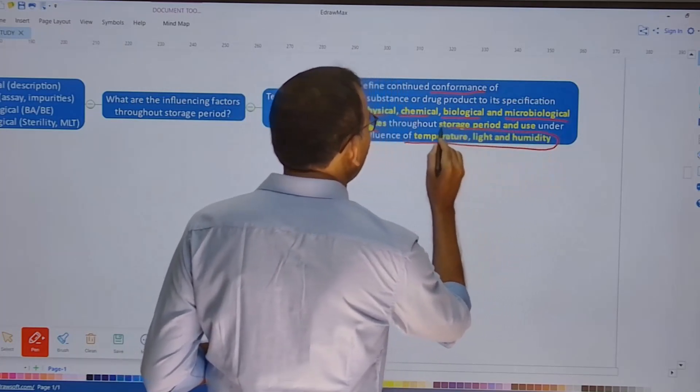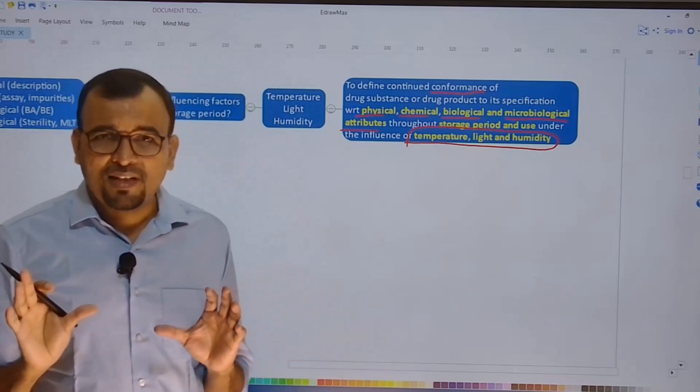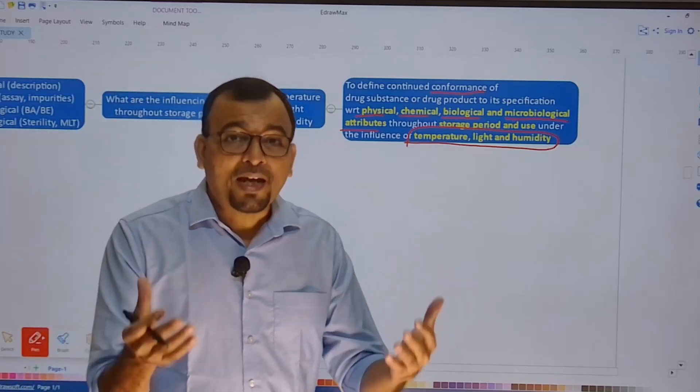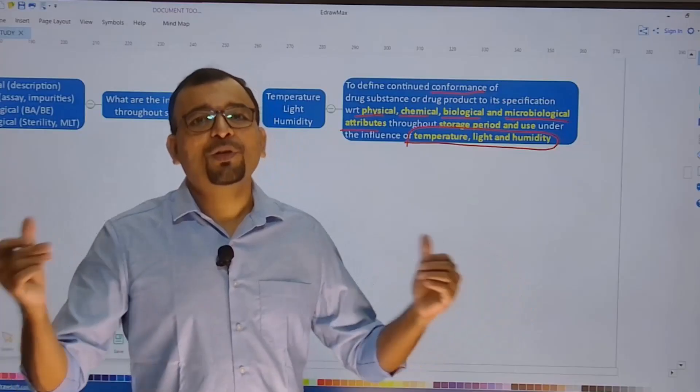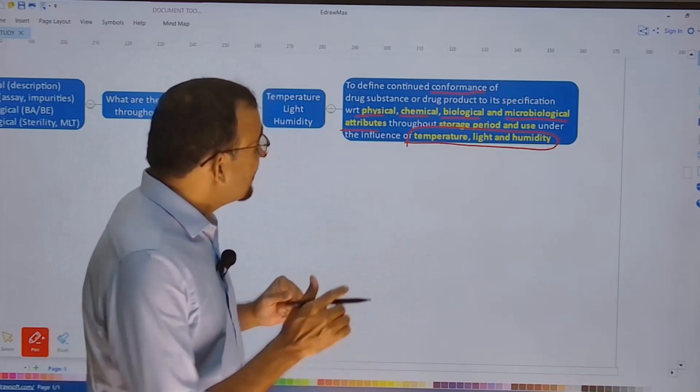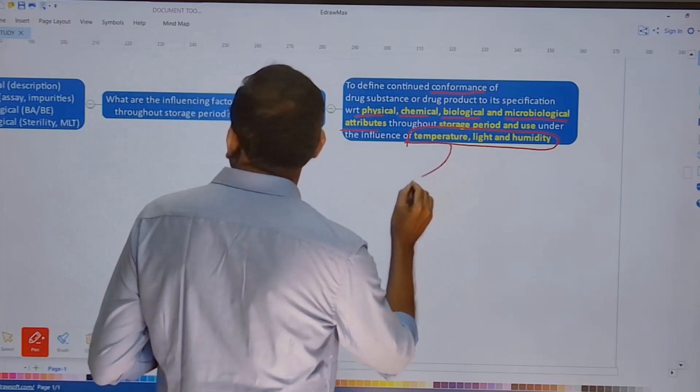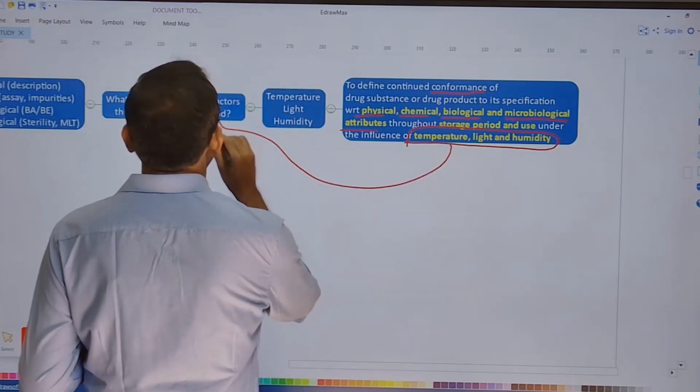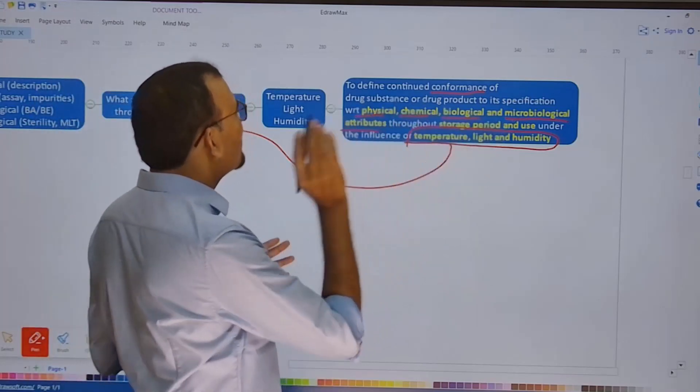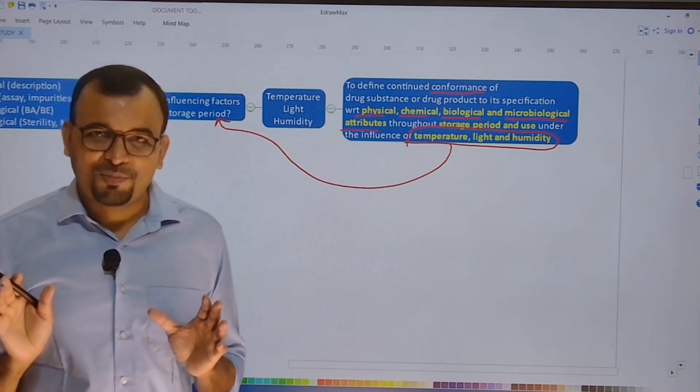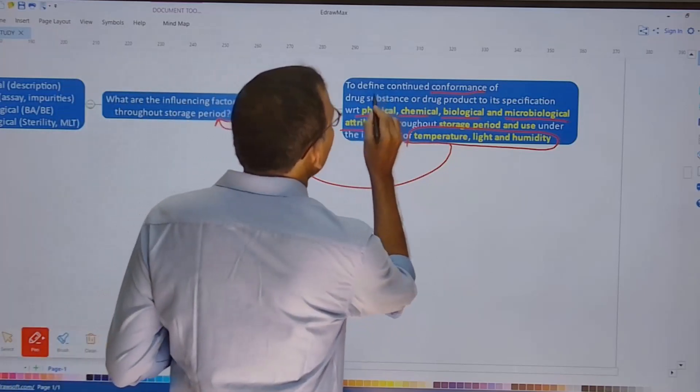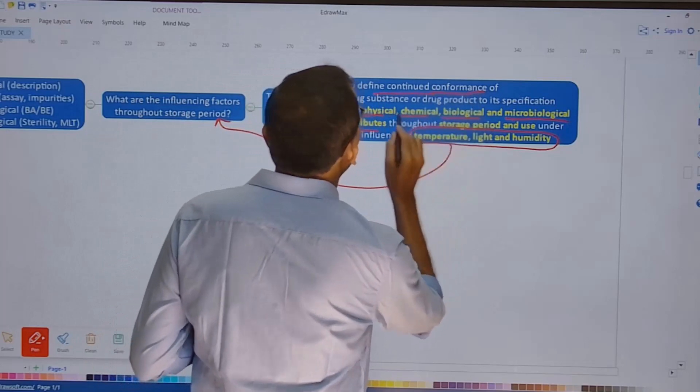Now why are these three conditions selected? Temperature, light, and humidity are selected because these are the available factors during the storage of the product or during the consumption of the product. And hence their impact needs to be studied. Their impact needs to be studied on the critical quality attributes like physical, chemical, biological, and microbiological attributes in such a way that they continue to meet the specification.